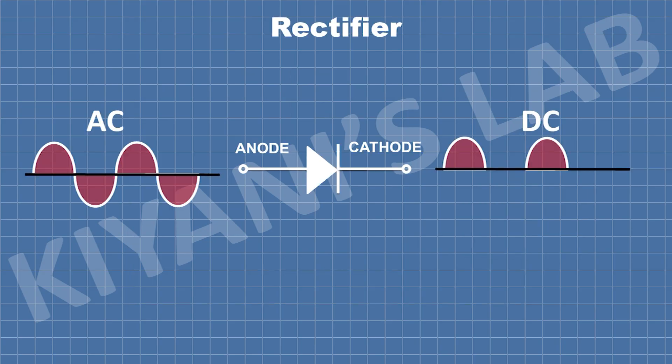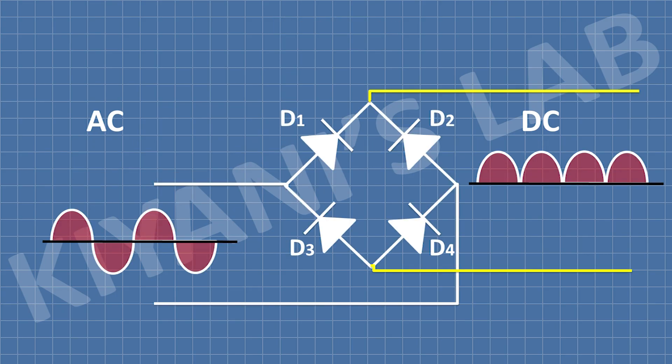If we apply an AC signal at the input of a diode, we will have a DC signal at the output of the diode. So that's it for today's video. I hope you have enjoyed this video. For more videos like that, stay tuned and I will see you in the next video.